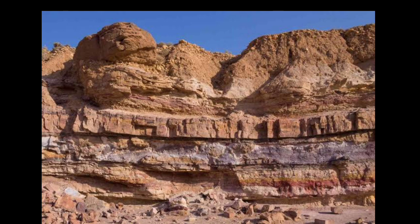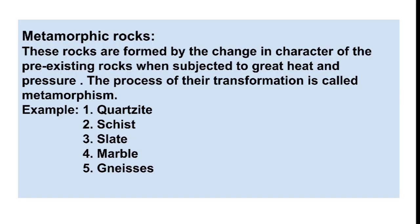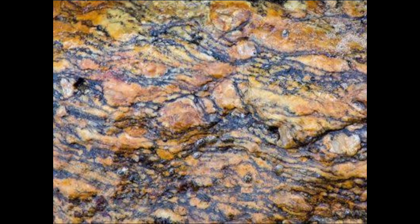Metamorphic rocks are formed by the change in character of pre-existing rocks when subjected to great heat and pressure. This process of transformation is called metamorphism. Examples include quartzite, schist, slate, marble, and gneiss.